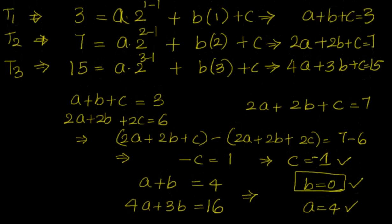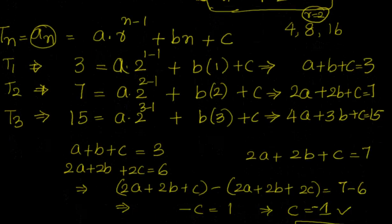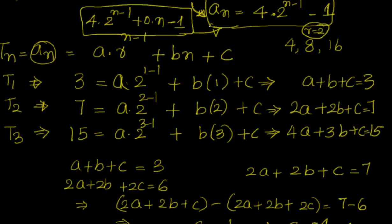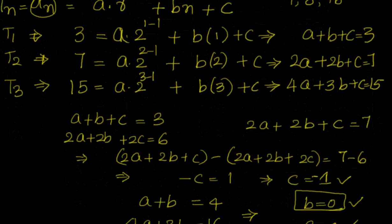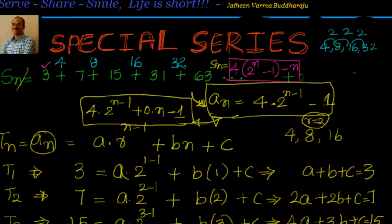With a = 4, b = 0, c = −1, our formula is aₙ = 4·2ⁿ⁻¹ − 1, exactly matching what we got from Method 1. Once aₙ is confirmed, finding Sₙ follows the same sigma process as before. Both methods give consistent results.